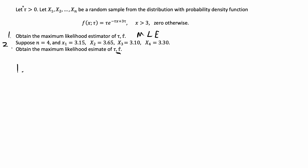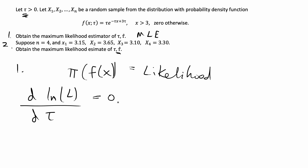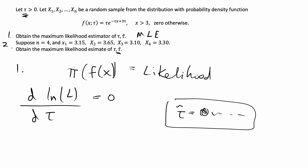We're given a PDF and we're asked to estimate the parameter tau in the PDF. For calculating the maximum likelihood estimate, or MLE, we're going to do the following steps, which are always the same for these types of problems. We take the product of the PDF to form our likelihood function, then take the natural log of the likelihood function, then take the partial derivative of the log-likelihood with respect to tau, set that equal to zero, and solve for tau. That equation will be our maximum likelihood estimator.